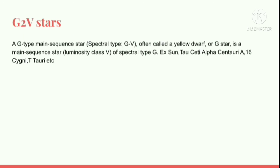Now we are going to talk about G2V stars. A G-type main sequence star, often called a yellow dwarf or G star, is a main sequence star of spectral type G. Examples: the Sun, Tau Ceti, Alpha Centauri A, 16 Cygni, T Tauri, etc.